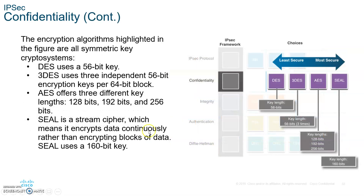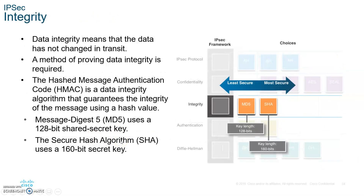For confidentiality you have: DES with a 56-bit key (weak), Triple DES with three keys (encrypt, decrypt, encrypt again), AES with 128, 192, or 256-bit keys (strongest), and SEAL with 160-bit keys (also very strong).